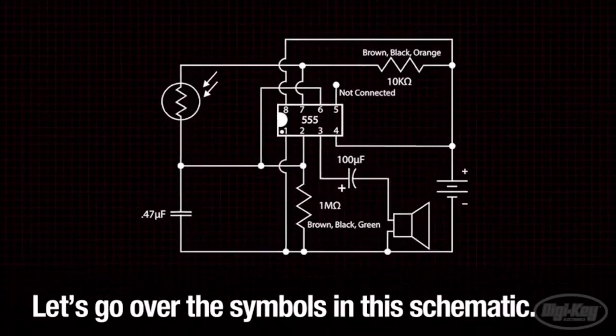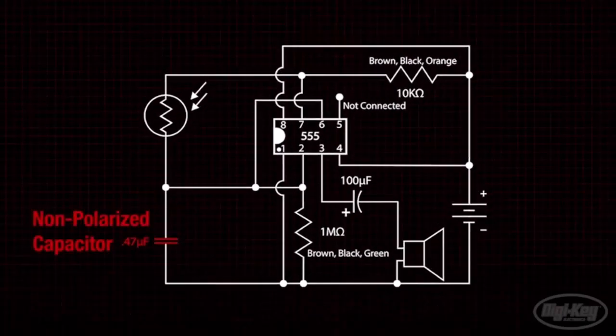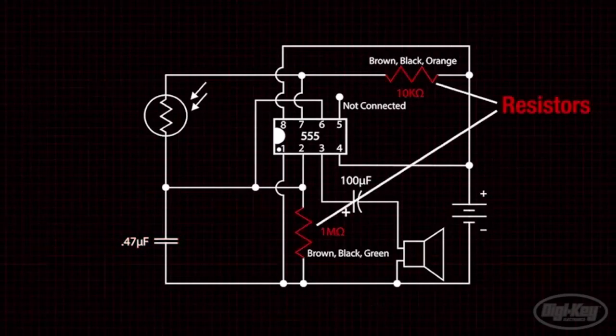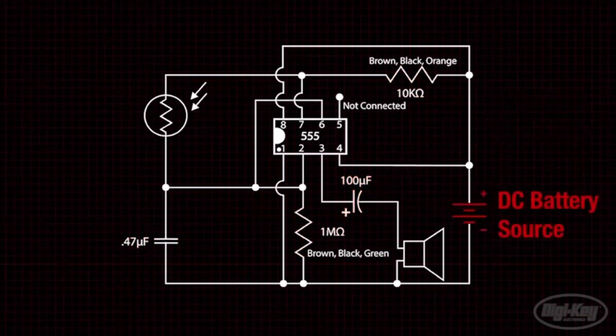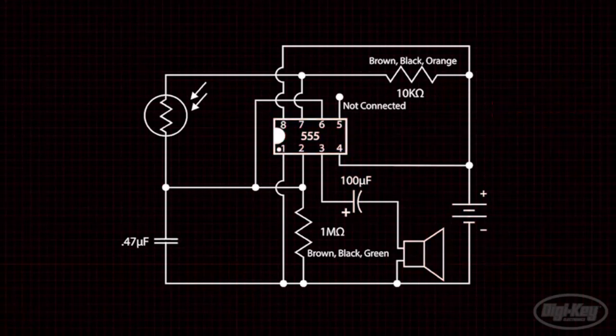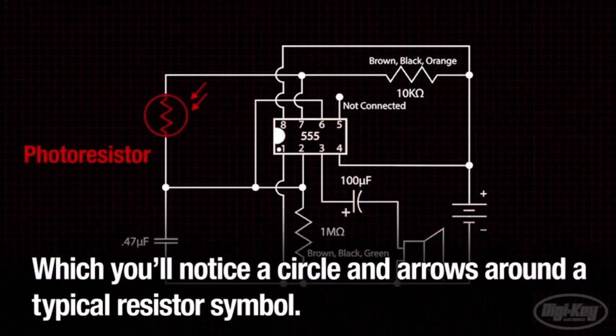the various symbols in the schematic. First there is a non-polarized 0.47 microfarad capacitor, a couple of resistors, a 100 microfarad polarized capacitor, a DC battery source, a speaker, a 555 timer chip, and a photo resistor which you'll notice